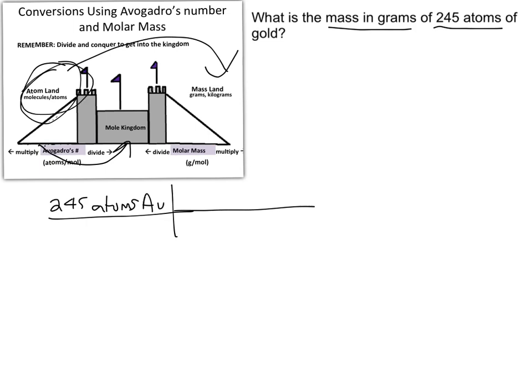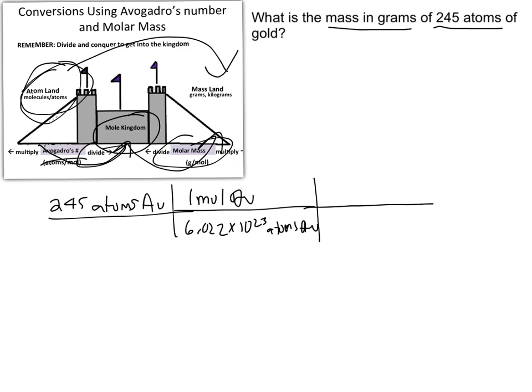Now, since I'm starting in atom land, I need to divide by Avogadro's number. So 6.022 times 10 to the 23rd atoms AU for every mole of AU. And then I'm going to go from the mole kingdom into mass land, and anytime I'm leaving the kingdom, I'm going to be multiplying. In this case, I'm going to be multiplying by the molar mass. So the molar mass of gold is as follows per one mole, as we saw in our previous problems.